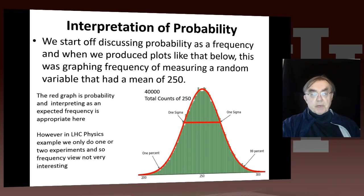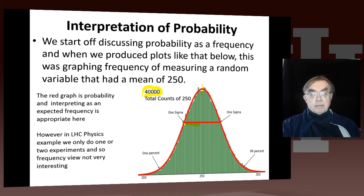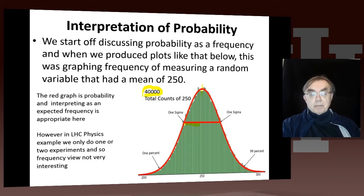When we first started off talking about probability, we produced 40,000 different measurements of 250 — not 25 — and we said we had a Gaussian, with a mean of 250 and an error of the square root of 250. We have this Gaussian which fits the data quite well. It didn't fit as well for 25 because 25 is not a big number. That's fine if we have 40,000 experiments.